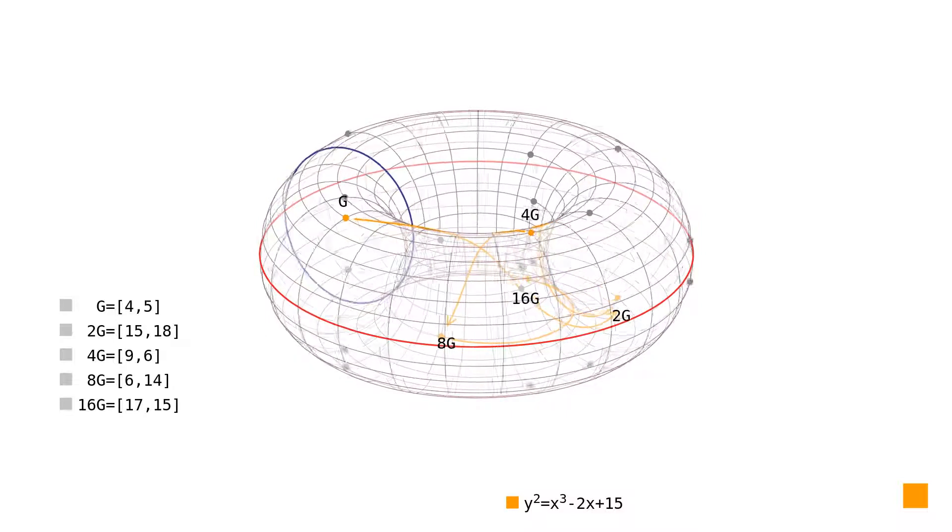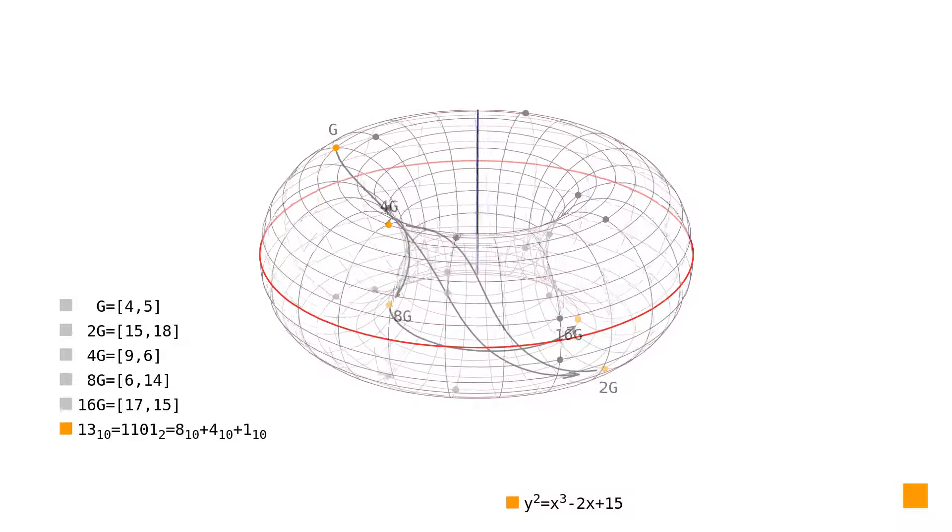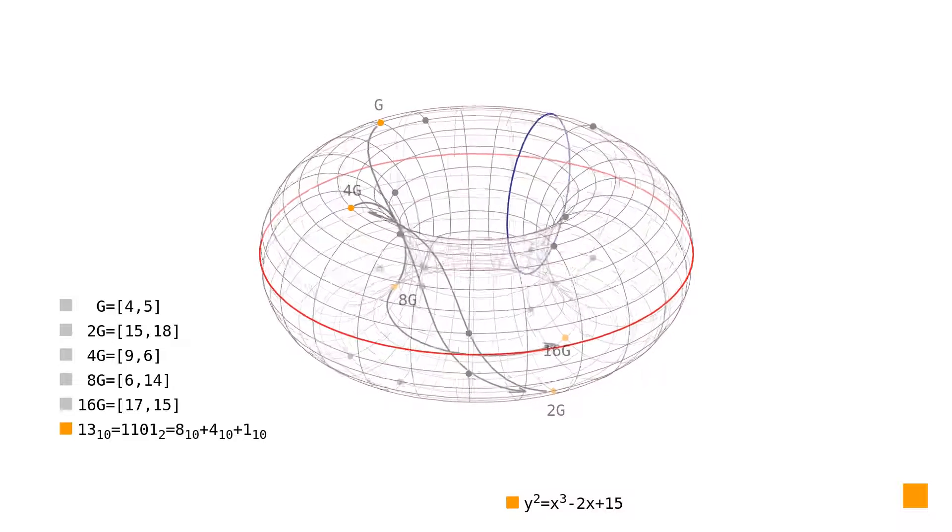Instead, we look at the binary representation of the number 13 and see that only bits representing 1, 4, and 8 are used.